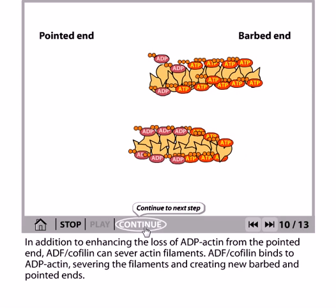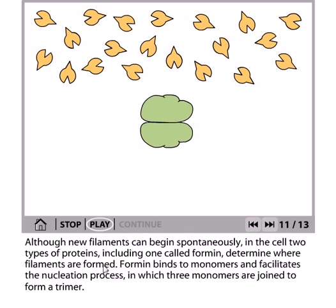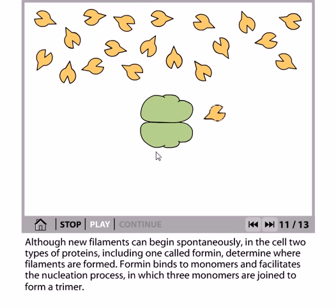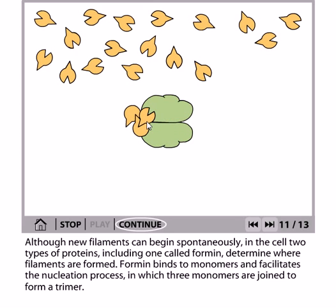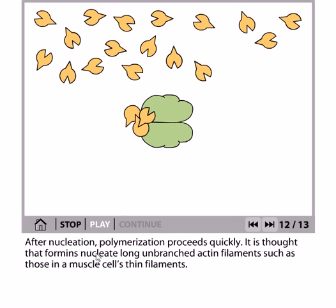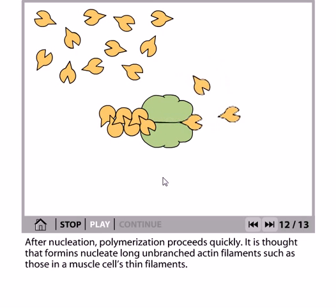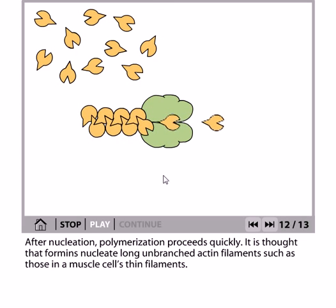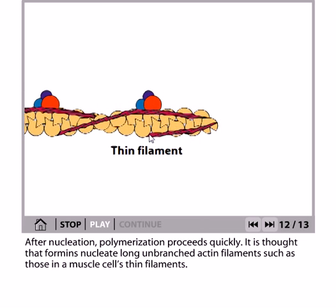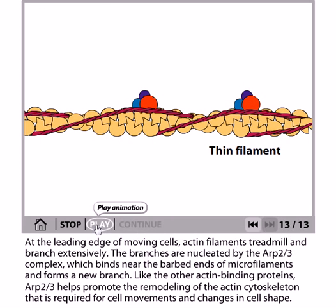Although new filaments can begin spontaneously in the cell, two types of proteins — including formin — determine whether filaments are formed. Formin binds to monomers and facilitates the nucleation process to make the first nucleus of actin filament assembly, which is a trimer of G-actin. Right after this nucleus forms, polymerization proceeds quickly. Formin nucleates long, unbranched actin filaments, such as those in muscle cells, as you can see here.